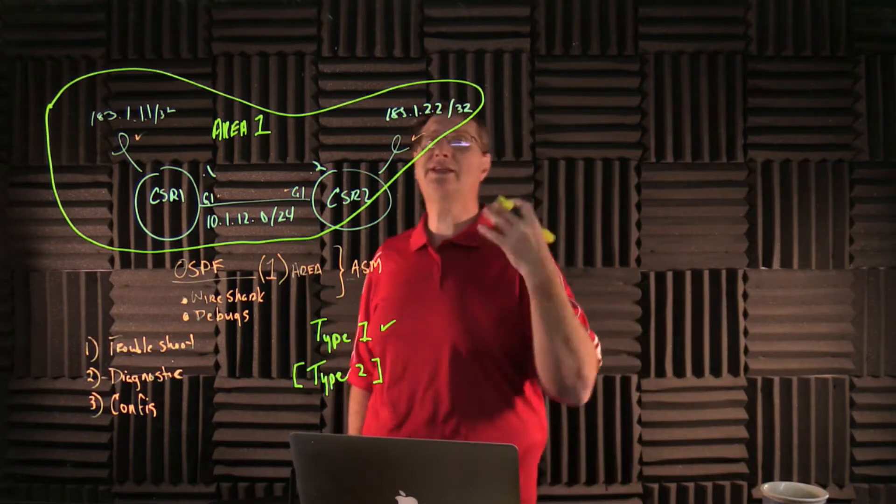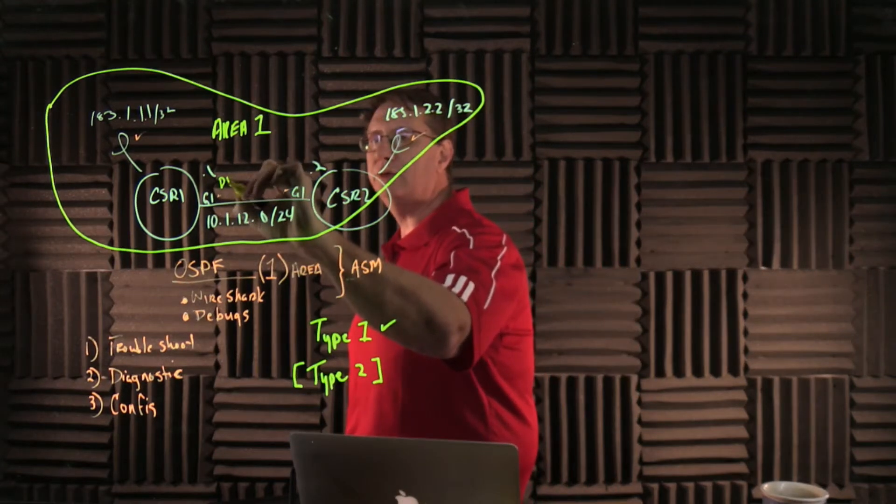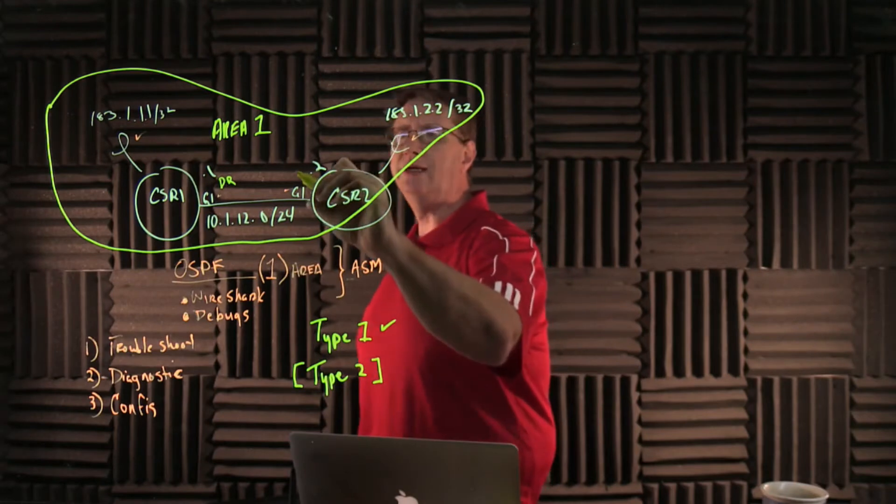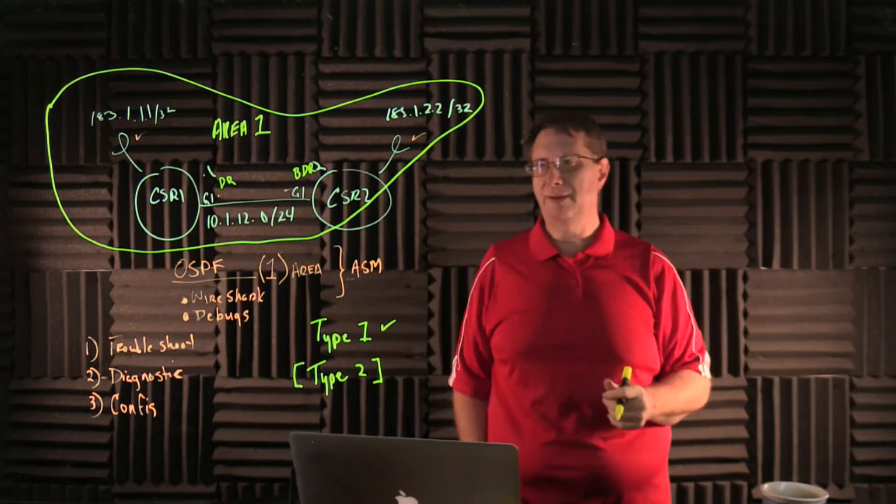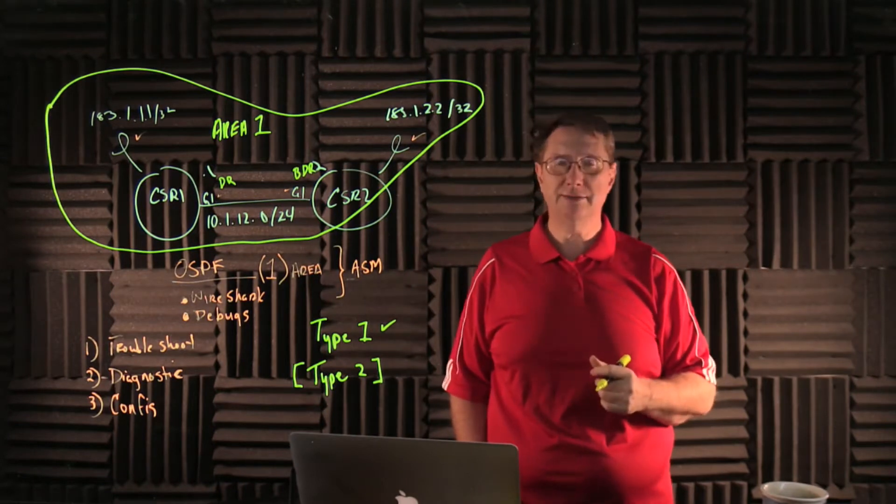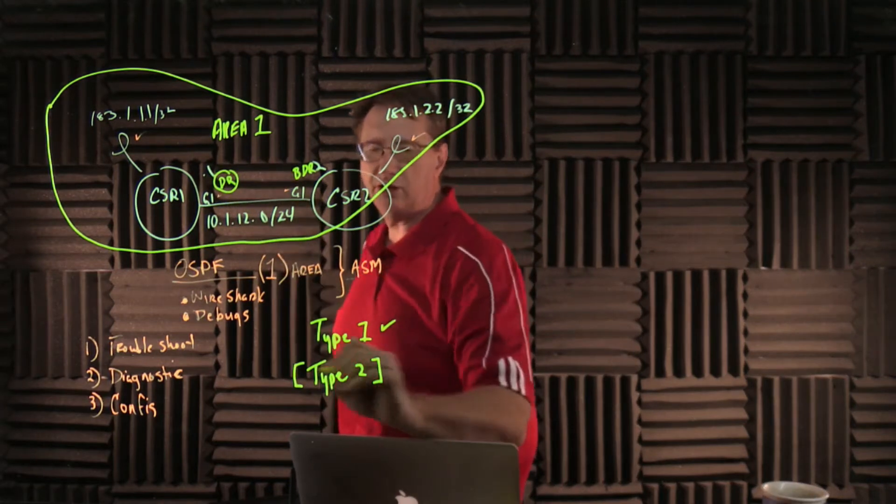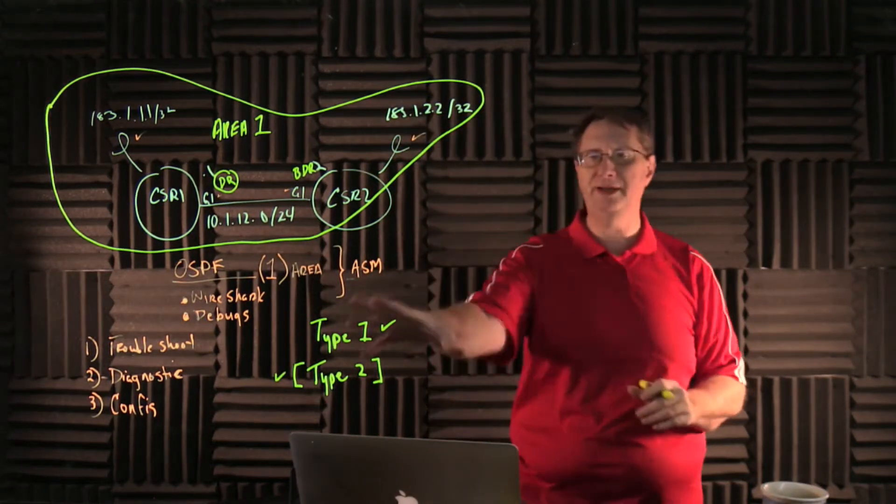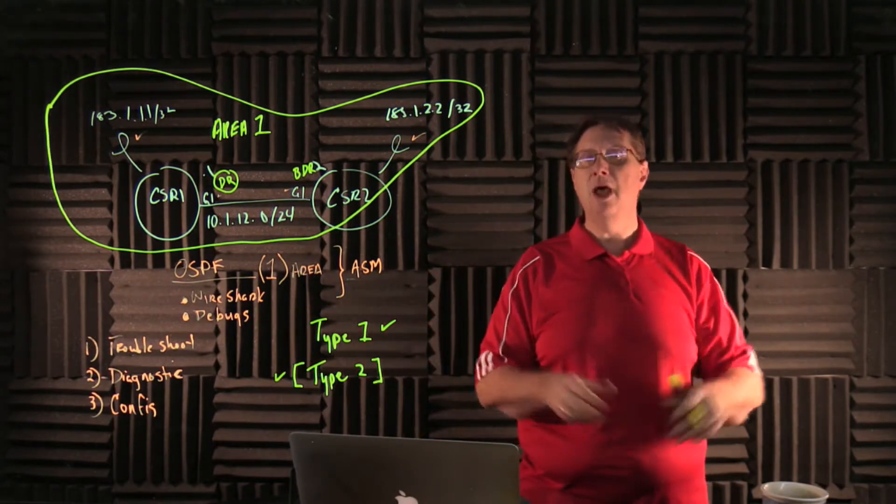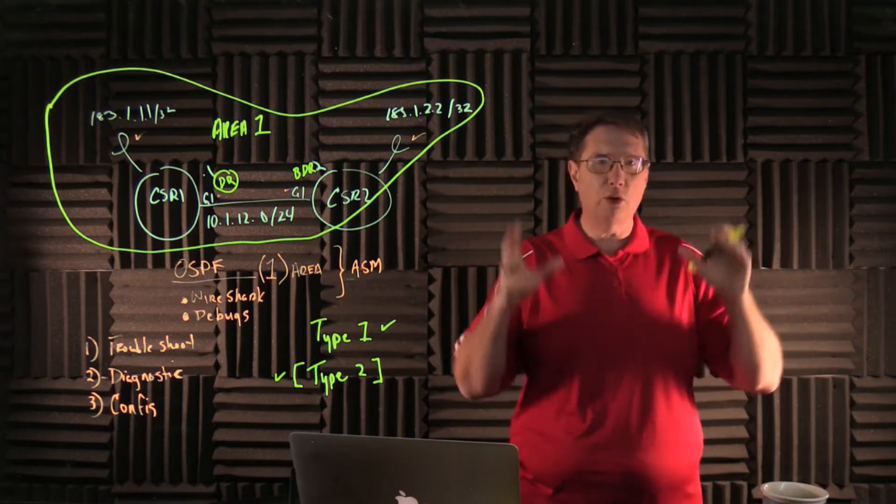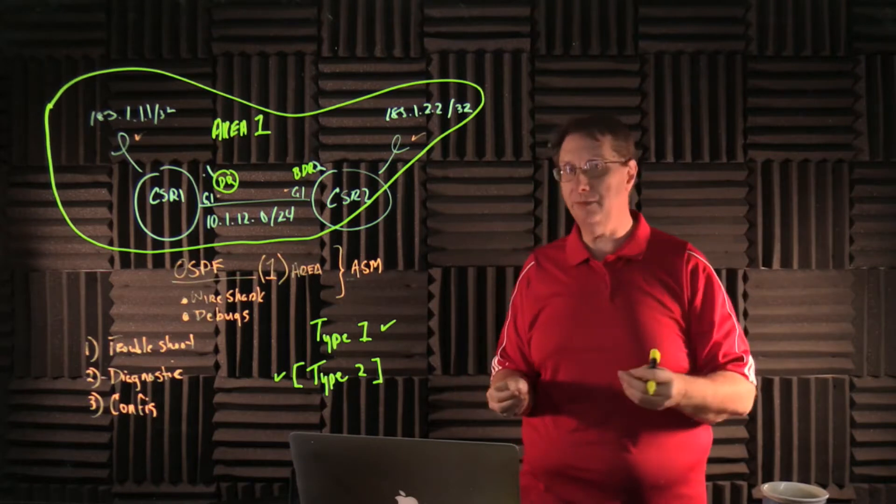So first of all, we said that we had an election where we elected a designated router, which if I remember correctly, was CSR1, and we elected a backup designated router, which is CSR2, if indeed my process or my memory is correct. Now what that means is that CSR1 is actually going to create these Type 2 LSAs. But what I want to do is I want to put a pin in those. We're going to come back to them after we talk about the Type 1s, because the Type 1s are essential for address learning after we've formed adjacencies. So we've gone through this entire process.